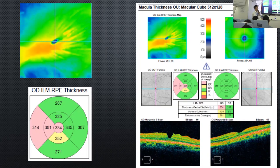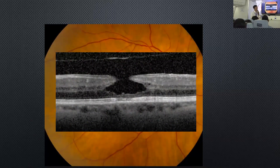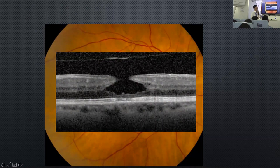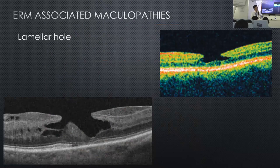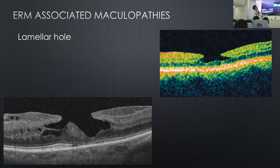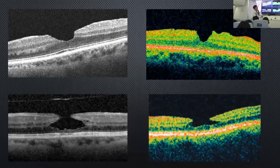Here are more examples of the same. It is caused usually by the presence of epiretinal membrane. A lamellar hole typically shows significant thinning of the macula with splitting of the retinal layer. Some of these can look very odd and have strange appearances. Here are more examples of lamellar macular hole and pseudo macular hole.